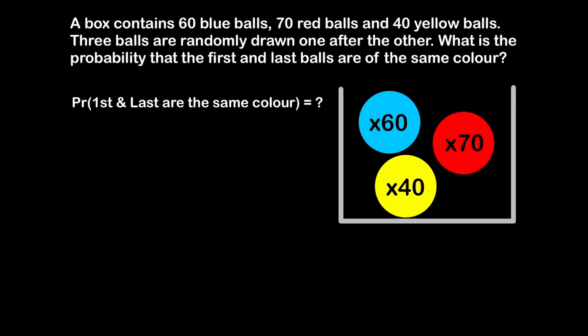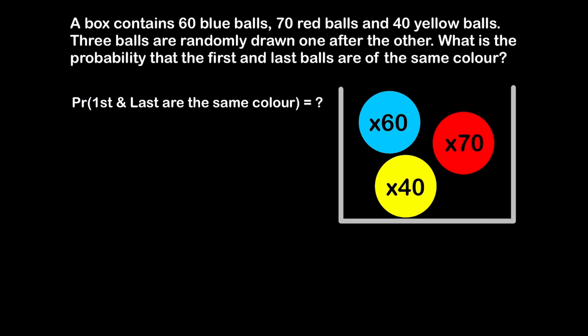We need to find the probability that the ball drawn in the first position and the ball drawn in the third position are both the same color. So if the first ball is blue, the third ball needs to be blue, and it doesn't matter what the second ball is.